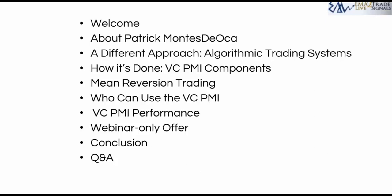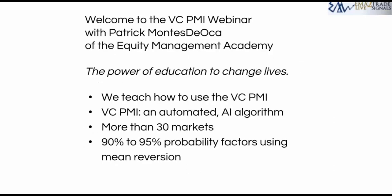Welcome to the webinar. I'm the CEO of the Equity Management Academy. I've been around for more than 30 years, and one thing I've learned is that the power of education can change lives. What we teach here is how to use the VC PMI, the automated algorithm. The VC PMI runs in more than 30 markets and identifies 90–95% probability trades using mean reversion trading.